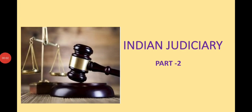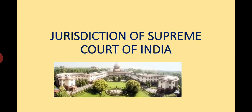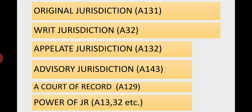Hi guys, today we will discuss Part 2 of the Indian Judiciary — the jurisdiction of the Supreme Court of India (adhikar kshetra). There are four types of jurisdiction as mentioned in our Constitution: original jurisdiction (Article 131), writ jurisdiction, appellate jurisdiction, advisory jurisdiction, court of record, and the power of judicial review.